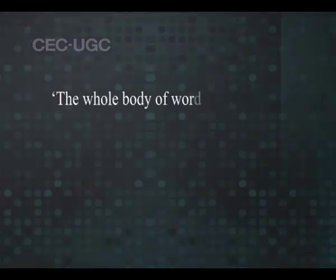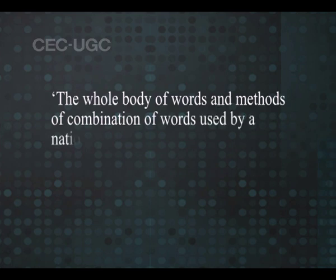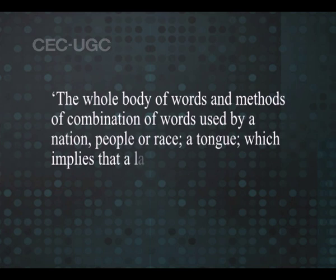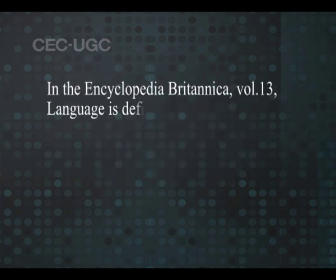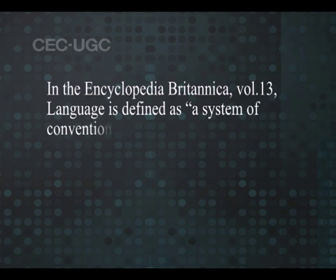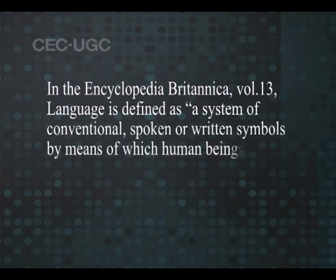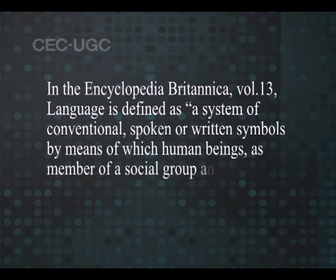Definitions of language. The Oxford English Dictionary defines language as the whole body of words and methods of combination of words used by a nation, people or race — a tongue — which implies that a language can exist in spoken as well as written forms. In the Encyclopedia Britannica, volume 13, language is defined as a system of conventional spoken or written symbols by means of which human beings as members of a social group and participants in its culture communicate.